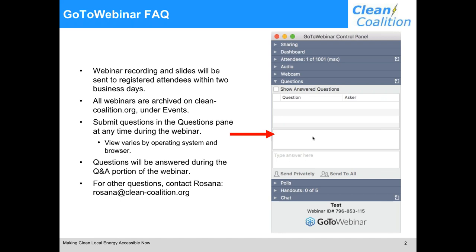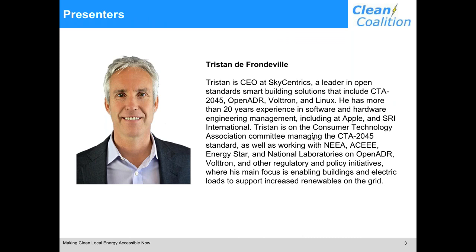We're lucky today to have two great presenters who are part of Tucson Electric Power's Project RAIN, or Resource Aggregation and Integration Network. Project RAIN studied how open standards help with installing and coordinating common consumer devices and DER like thermostats, water heaters, electric vehicle chargers, energy storage, and solar. So presenting today, we have Tristan de Frondeville, CEO at SkyCentrics. Tristan has more than 20 years of experience in software and hardware engineering management, and he's working on regulatory and policy initiatives focused on enabling buildings and electric loads to support increased renewables on the grid.